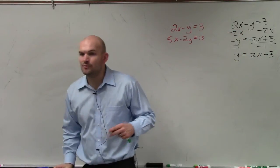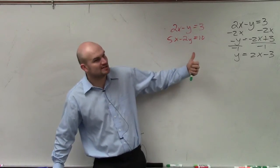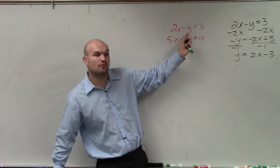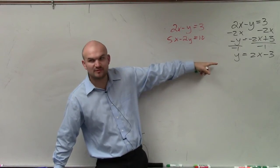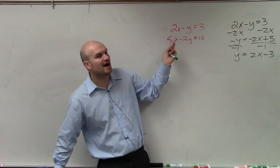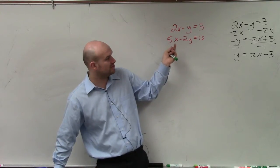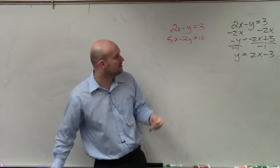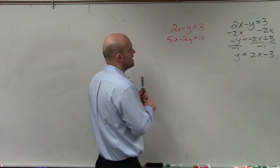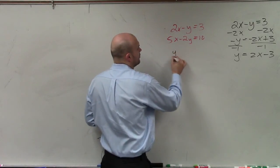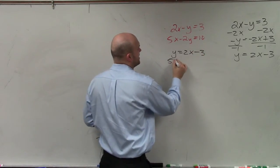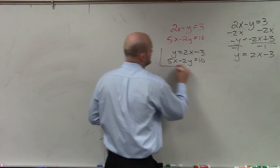So what I did was — and you could solve for any variable you want to — however, I always like choosing variables that have a coefficient of 1 or negative 1, because it's fairly easy arithmetic compared to solving with something like a coefficient of 5 over here. It's going to be a little bit more work, but you could easily do it. So now I have two equations.